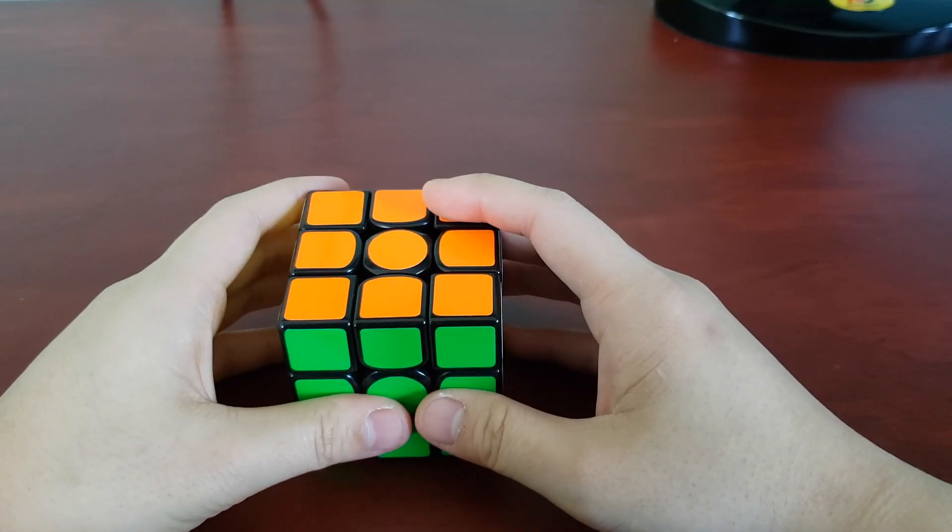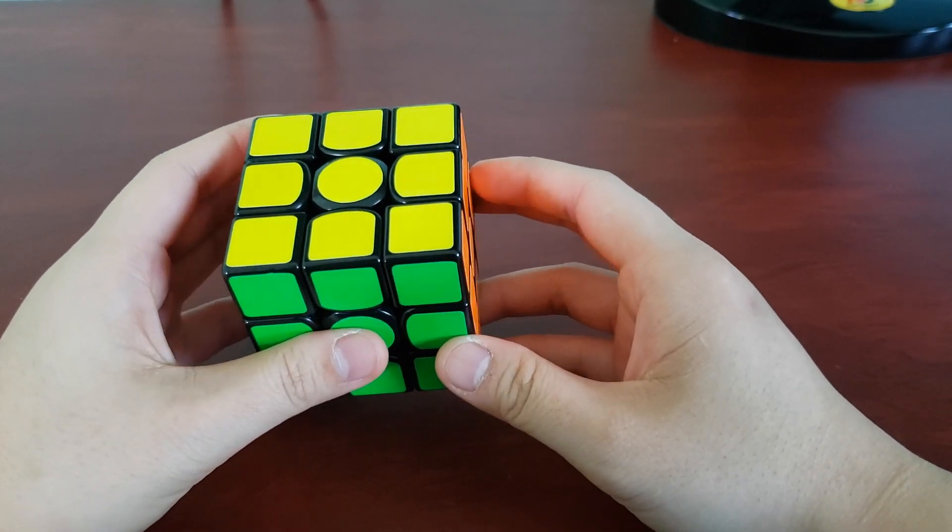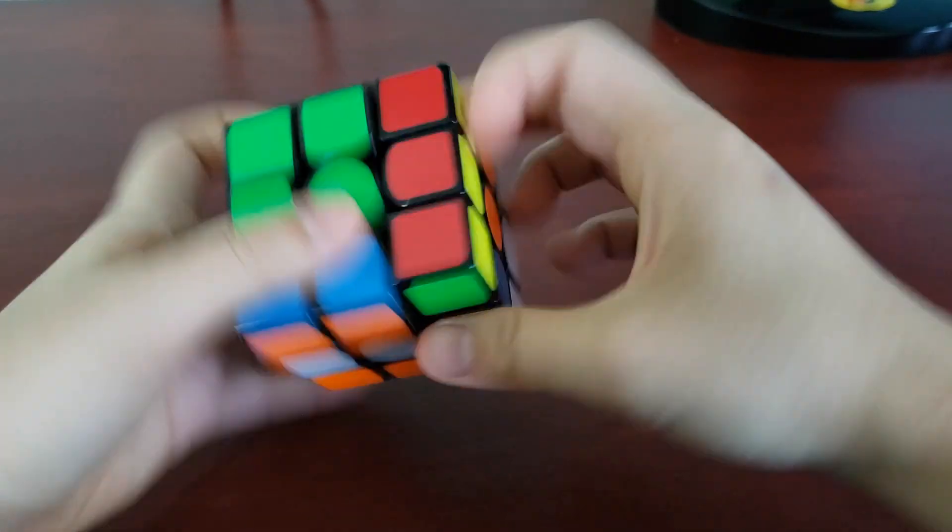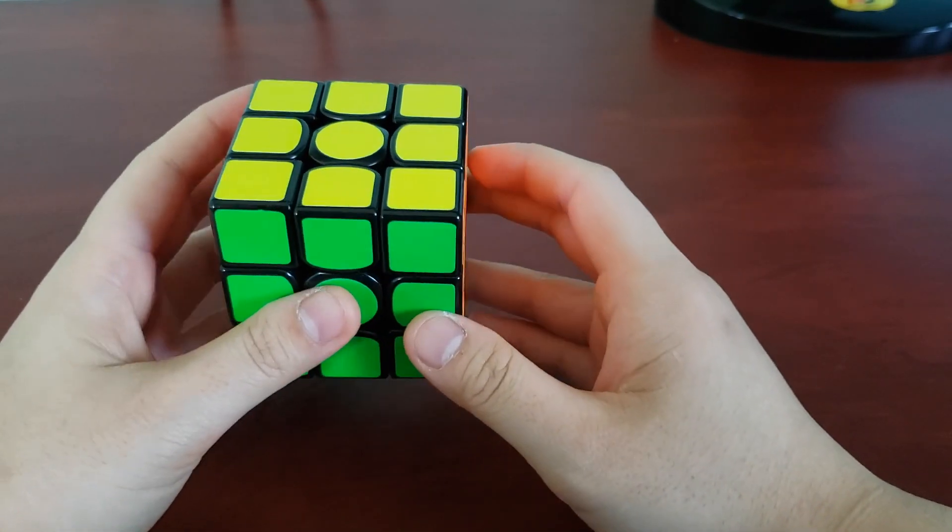So first I'll show you what the algorithm looks like fast, and then I'll break it down and give some tips for finger tricks. So here's what it looks like executed quickly. Looks pretty nifty, doesn't it?